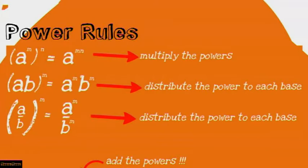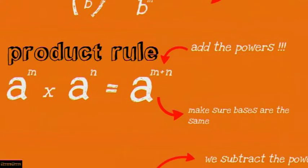If given (a over b) to the power m, this will equal a to the power m over b to the power m — again, you distribute the power to each base. And now the product rule: if given a to the power m multiplied by a to the power n, this will equal a to the power m plus n. You add the powers — just make sure the bases are the same.